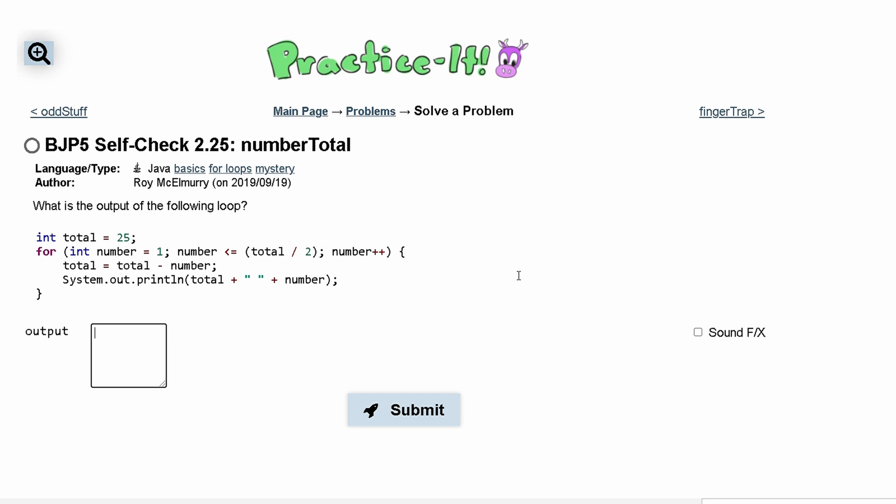For Practice-It self-check 2.26 numberTotal, we were asked what is the output of the following loop? We have int total equals 25 here.